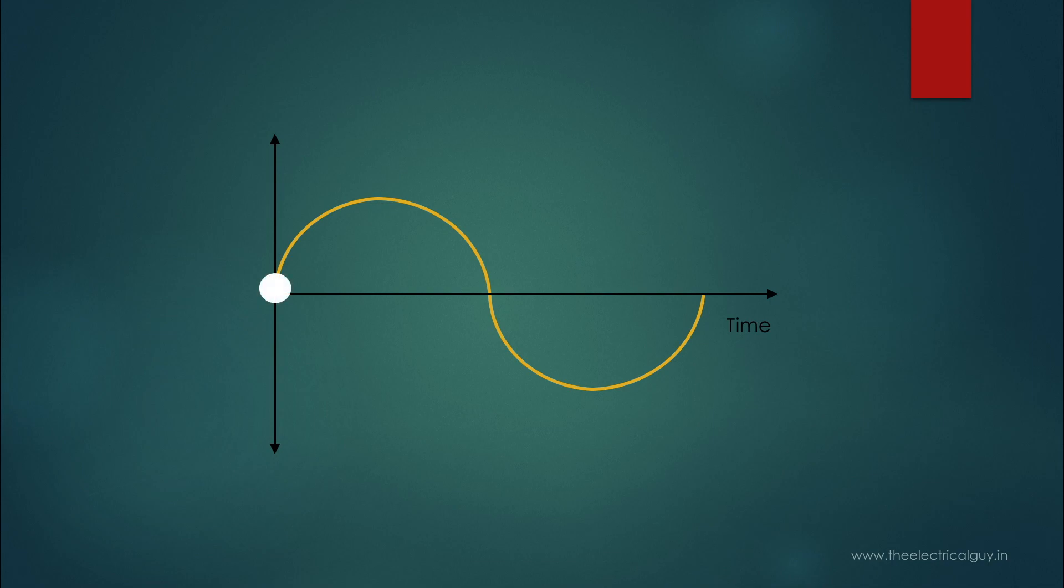At this position, the voltage is zero. At this position, the voltage is getting maximum. At this position, voltage is again getting zero. At this position, voltage is again getting maximum but in the opposite direction.